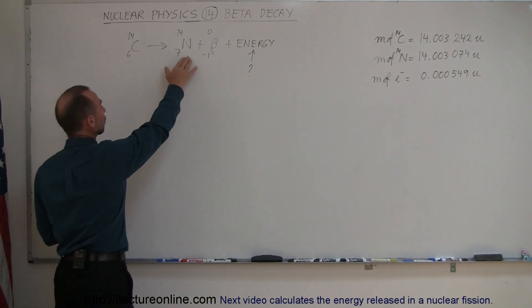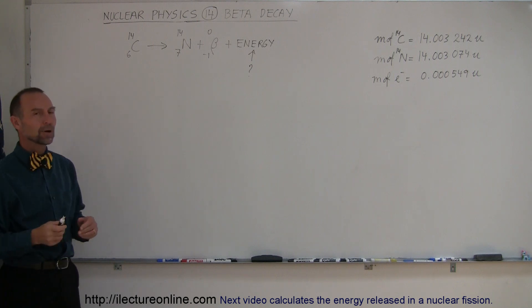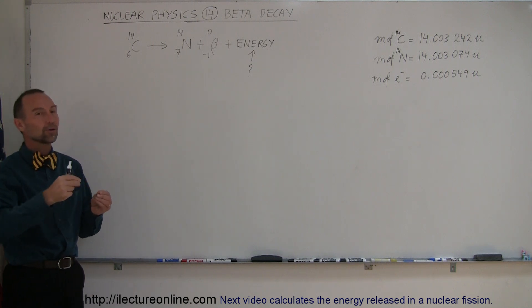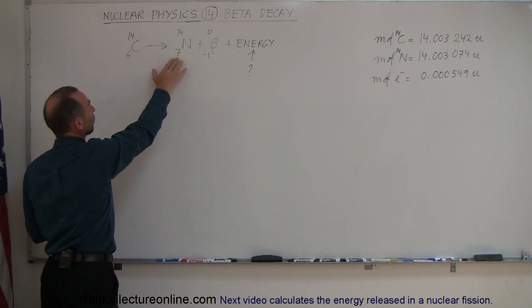It will decay to nitrogen and eject what we call a beta particle, which is nothing more than an electron. The only reason we call it a beta particle is because it came out of the nucleus, and it does so by taking a neutron and converting it to a proton.